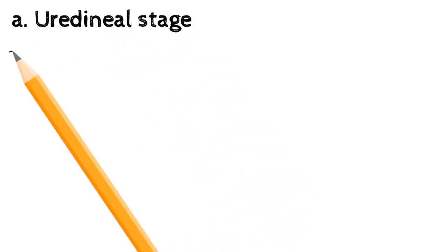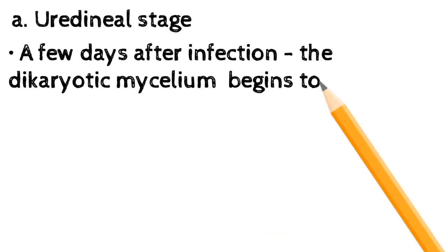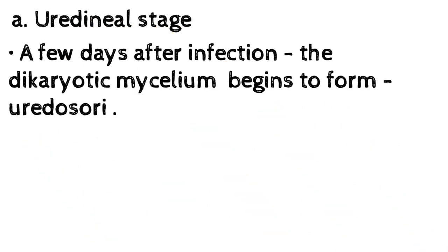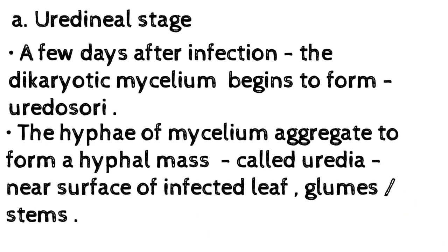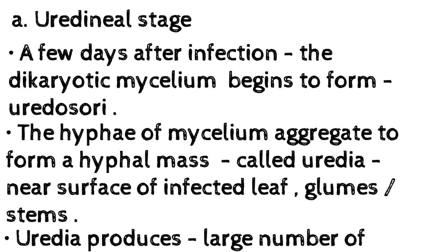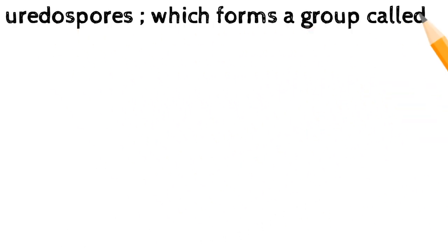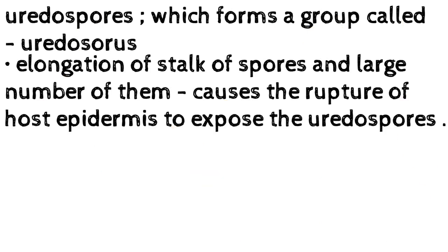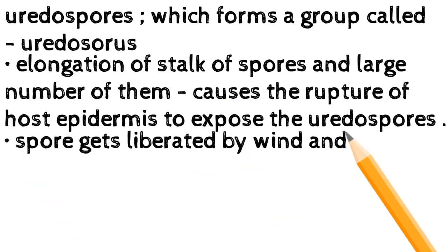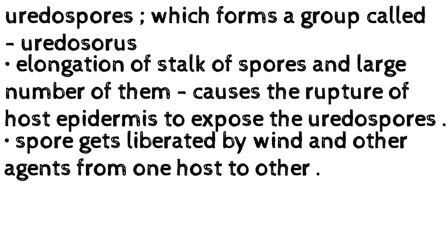A) Uredinal stage: a few days after infection, the dikaryotic mycelium begins to form uredosori. The hyphae of the mycelium aggregate to form a hyphal mass called uredia, near the surface of the infected leaf, culms, or stems. Uredia produces a large number of uredospores, which form a group called uredosori. Elongation of the stack of spores and large numbers of them causes the rupture of the host epidermis to expose the uredospores.